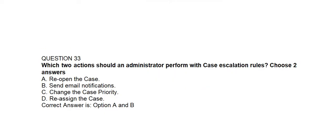Question number thirty-three. Which two actions should an administrator perform with case escalation rules? Option A: Reopen the case. Option B: Send email notifications. Option C: Change the case priority. Option D: Reassign the case. Correct answer is Option A and Option B: Reopen the case and send email notifications.